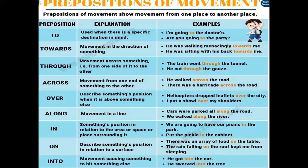'He is swimming across the river' uses 'across' because it is movement on a flat surface. 'Over' means something's position when it is above something else — like 'I put a shawl over my shoulder'; the shoulder is already there and you are covering it, showing movement. 'Along' means movement in a line — 'we walk along the river'; the river is already there and you walk alongside it.